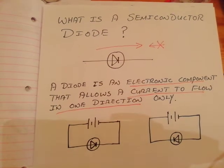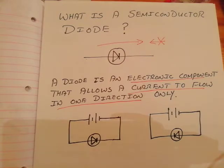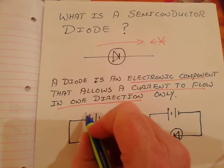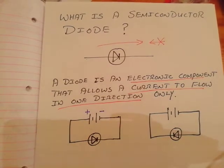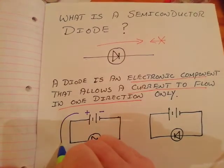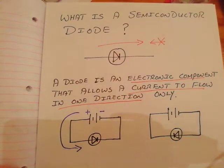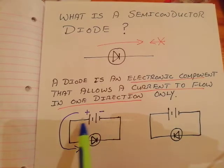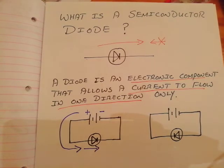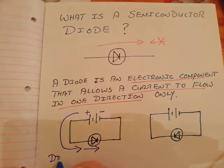Here we've got a diode in a circuit. That's the plus of the battery and that's the minus terminal. Current flows from plus to minus. So will the electric current flow through that diode? Yes it will, because the current and the arrow in the diode symbol are going the same way. That diode will conduct.